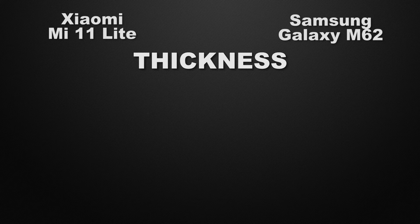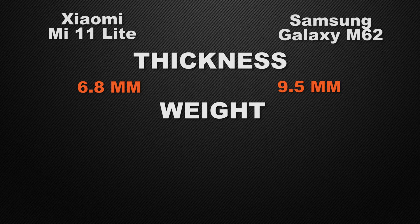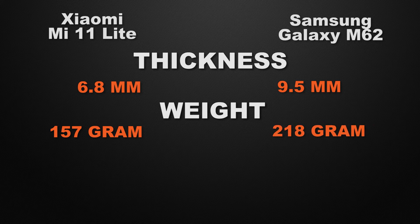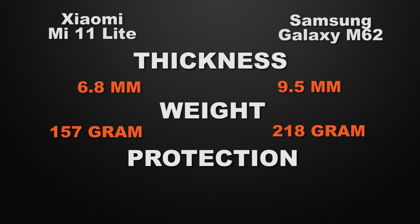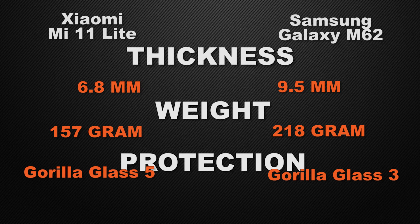Moving to the body features, the 11 Lite has a thickness of 6.8mm while the M62 has 9.5mm, so the 11 Lite wins with a slimmer body. For weight, the 11 Lite is 157 grams while the M62 is 218 grams, so the 11 Lite wins with lower weight. For protective glass, the 11 Lite has Gorilla Glass 5 while the M62 has Gorilla Glass 3 — so the 11 Lite wins with the newer generation glass.